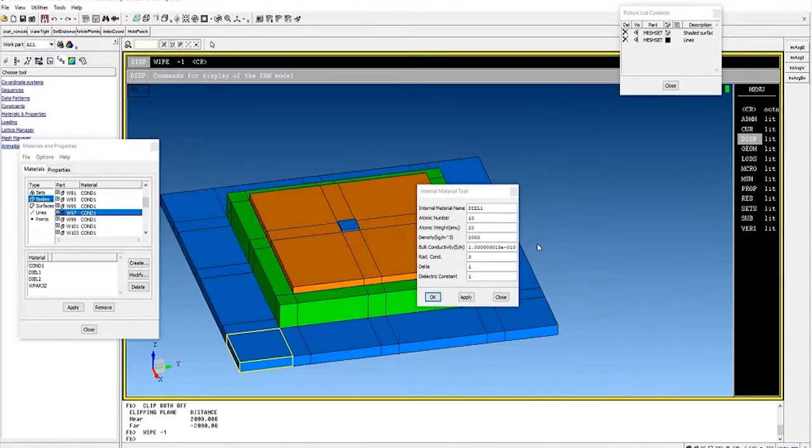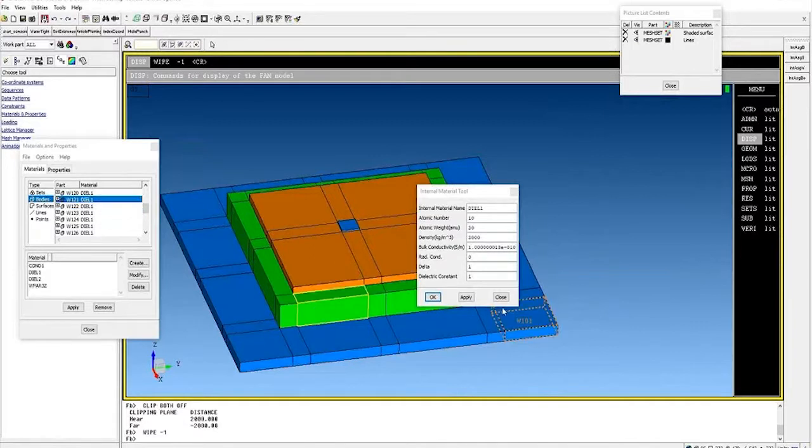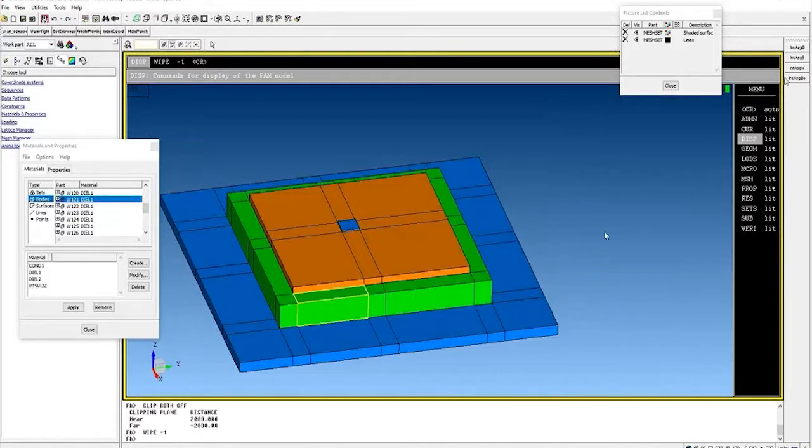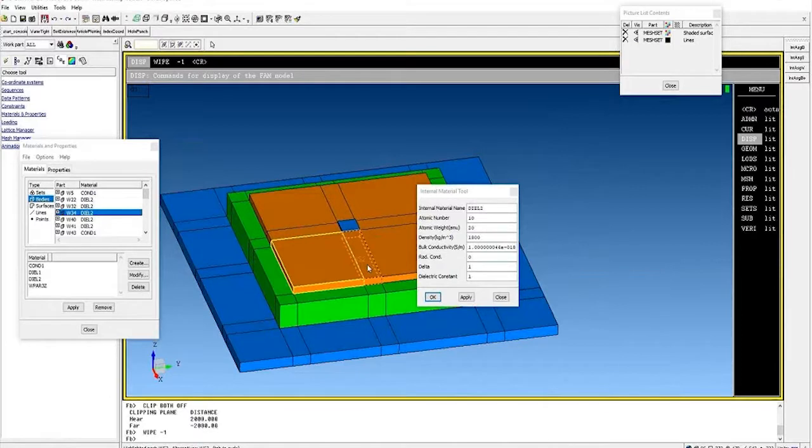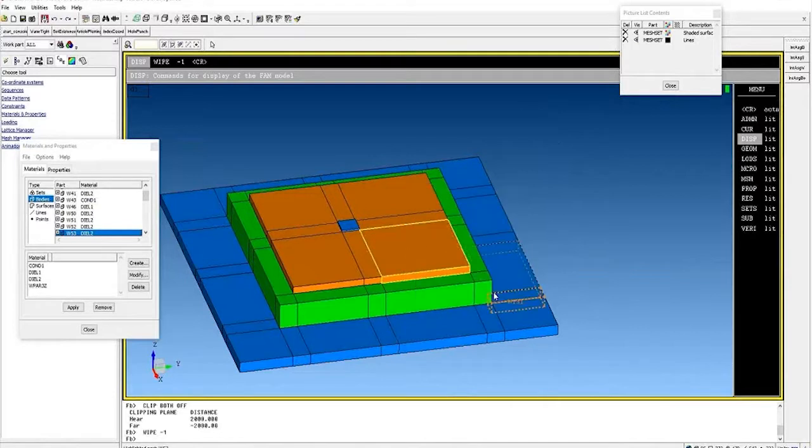And then, DL1, or dielectric 1, is that lower slab of dielectric with the moderately low conductivity on the order of 1e to the minus 10. And then, DL2, or dielectric 2, is that upper slab of dielectric near the patch that's a very, very low conductivity material. So, you can see what it looks like to have charging with variable conductivity within your model.